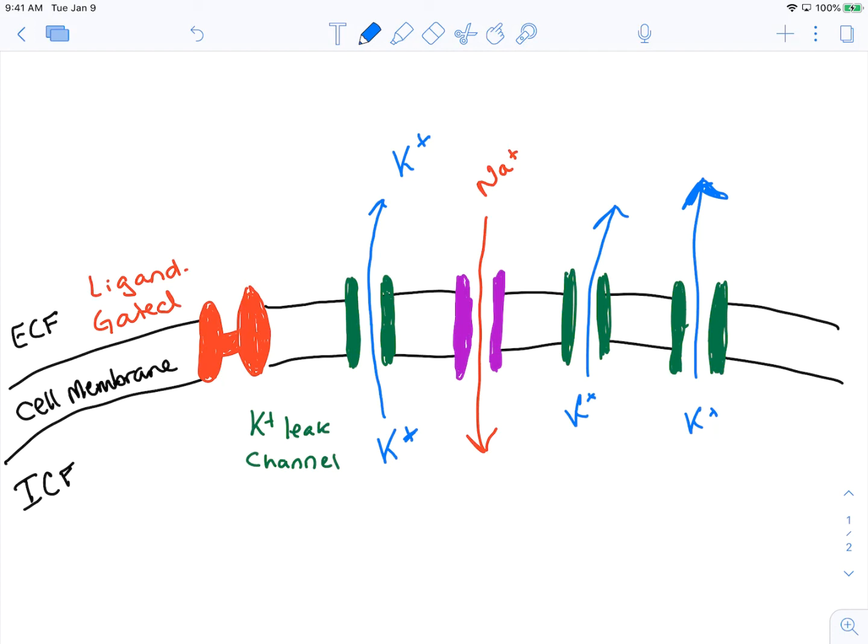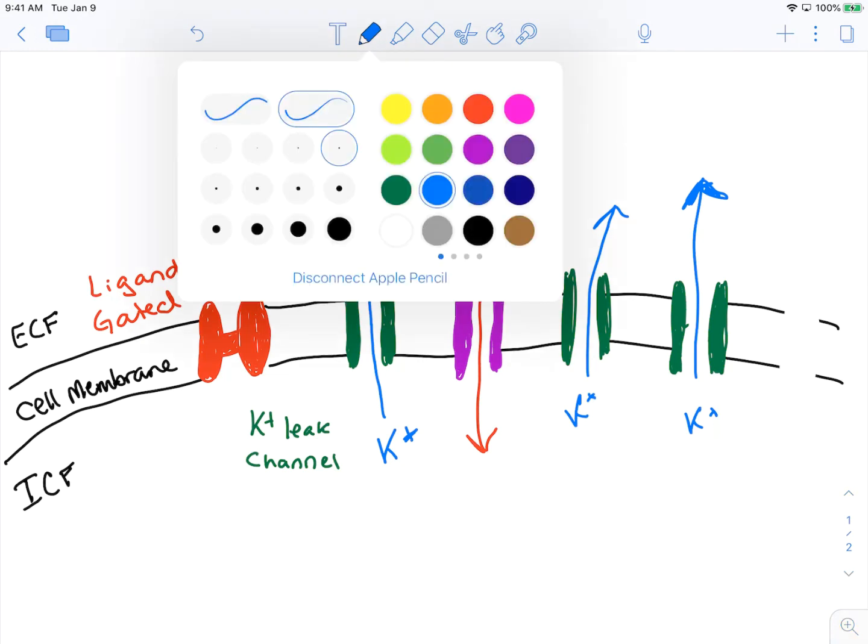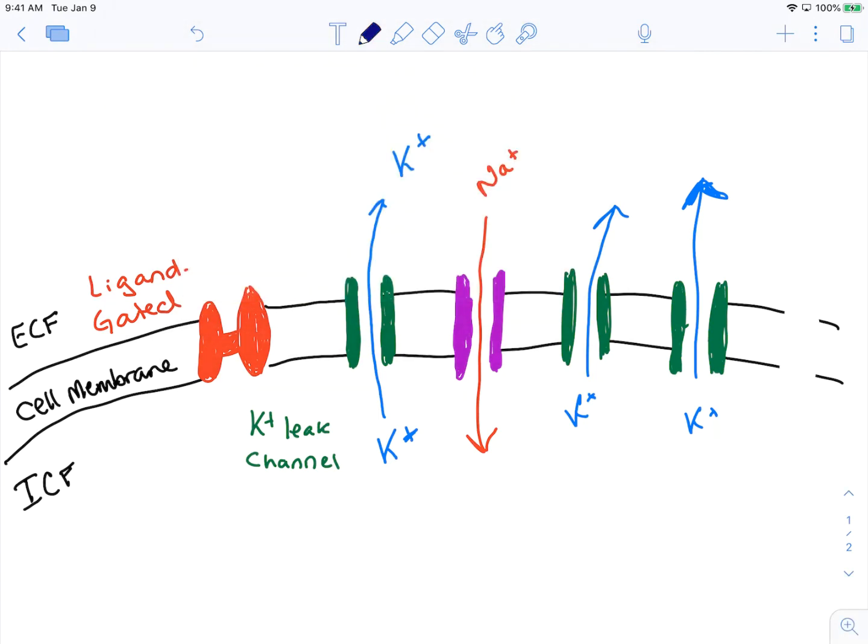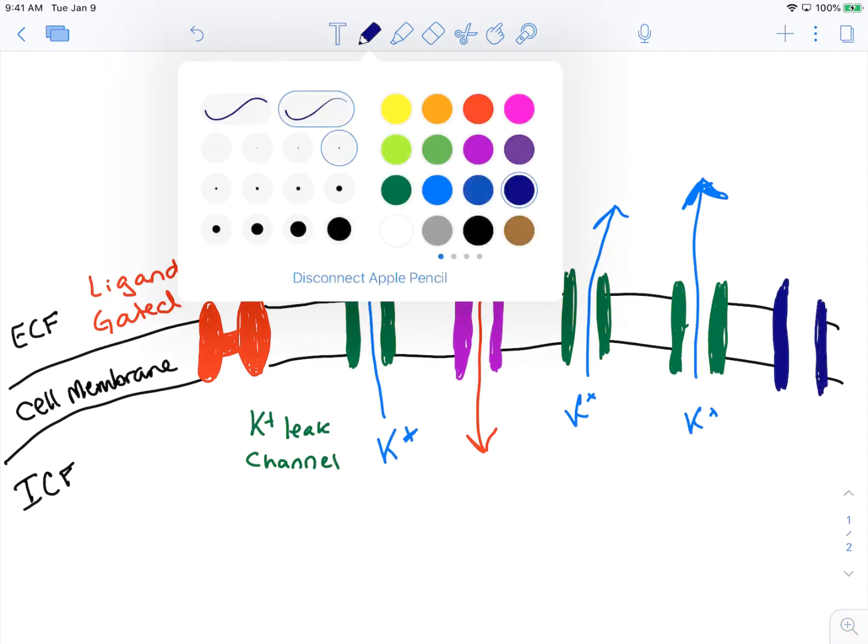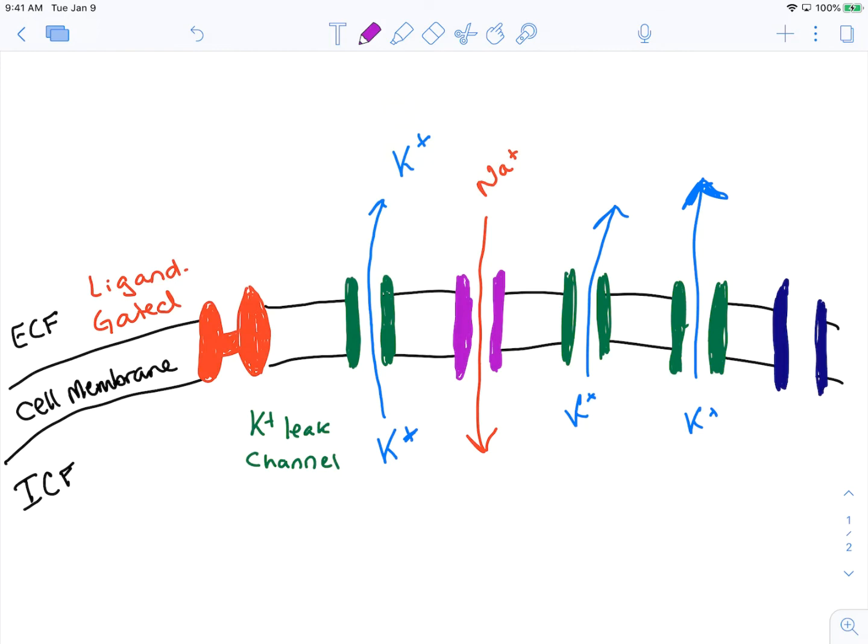There are other types of leak channels that come into play. There's chloride leak channels, and we can throw in a token chloride leak channel. When I'm teaching this level of physiology, I tend to more or less ignore these chloride leak channels to simplify, but it is important to notice these guys are here too. Chloride is concentrated in the extracellular fluid. Chloride is a negatively charged ion and it's going to leak into my cell.